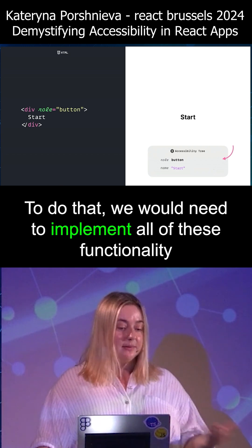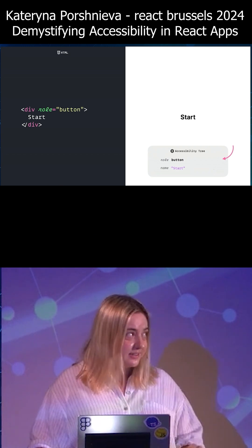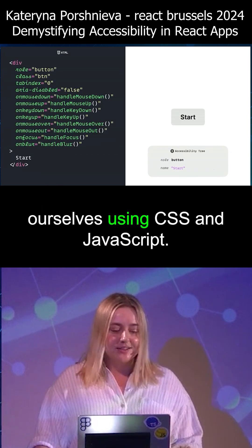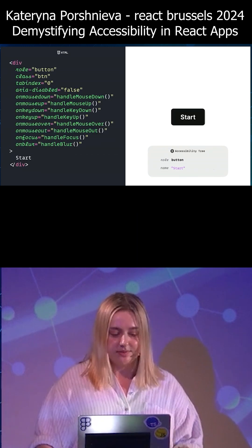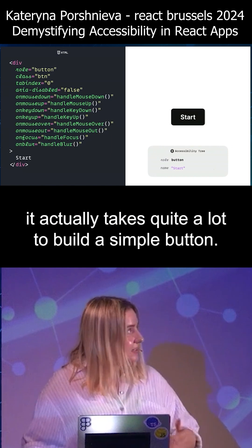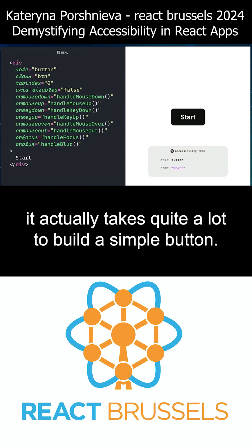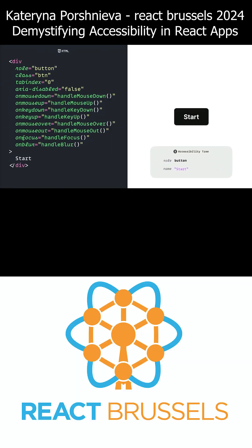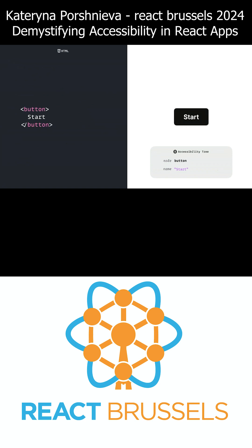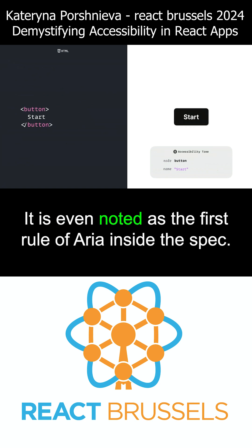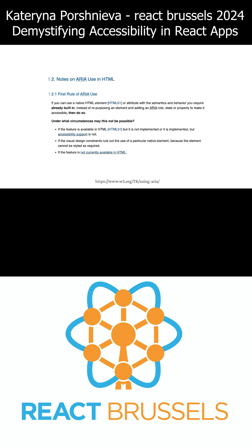To do that, we would need to implement all of this functionality ourselves using CSS and JavaScript. And as you can see, it actually takes quite a lot to build a simple button. In most cases, it is much easier and would be more accessible to use native HTML instead. It is even noted as the first rule of ARIA inside the spec.